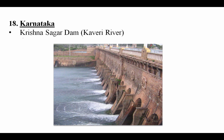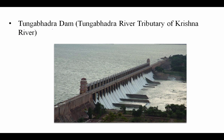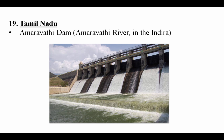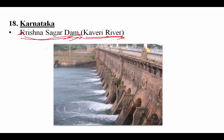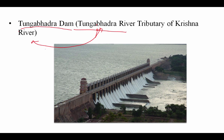From Karnataka, two important dams. First is Krishna Sagar Dam — remember that despite the name, it is on the Kaveri river, not the Krishna river. It is in Karnataka. K for Krishna Sagar, K for Kaveri, K for Karnataka. Second is Tungabhadra Dam on the Tungabhadra river, which is a tributary of the Krishna river.